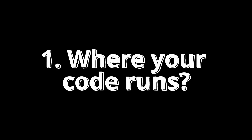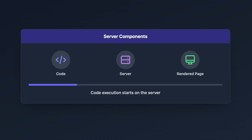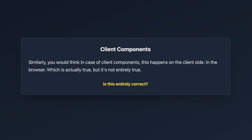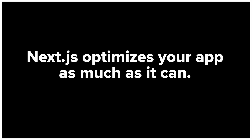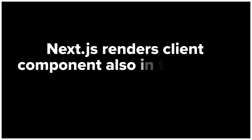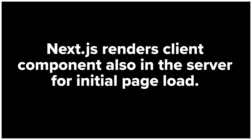Starting with where your code runs: for server components, this is pretty simple — code execution and rendering happens almost always on the server side. You might think client components run on the client side, which is true, but it's not entirely true. Next.js tries to optimize your app as much as it can, and it renders client components on the server as well, at least for the initial load of the page.